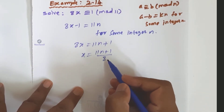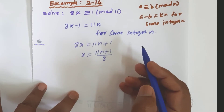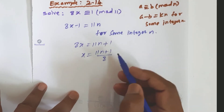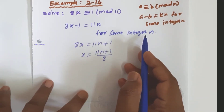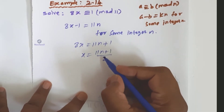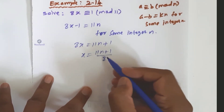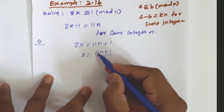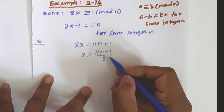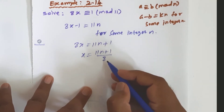We need 11n plus 1 to be divisible by 8. Let us try suitable values of n. When n equals 1: 11 plus 1 equals 12, which is not divisible by 8. Checking multiples: 8, 16, 24, 32, 40, 48, 56. We find that 56 is divisible by 8.